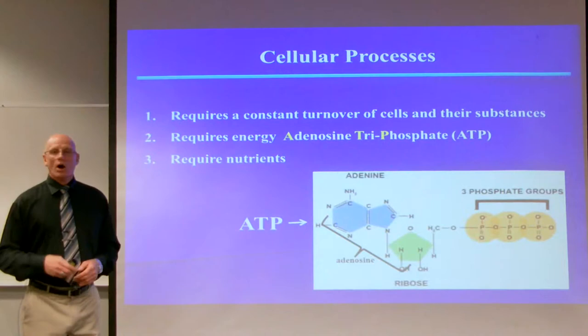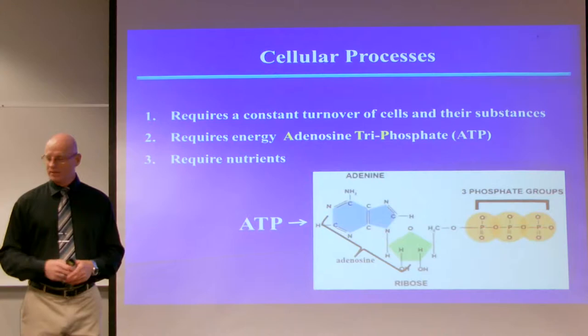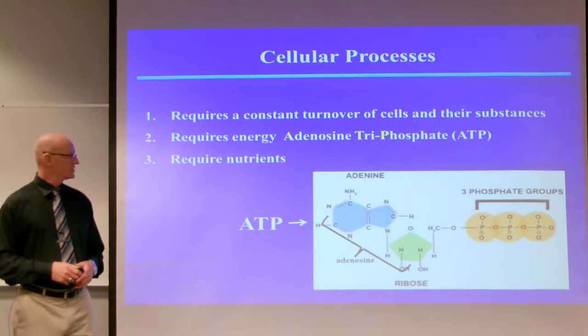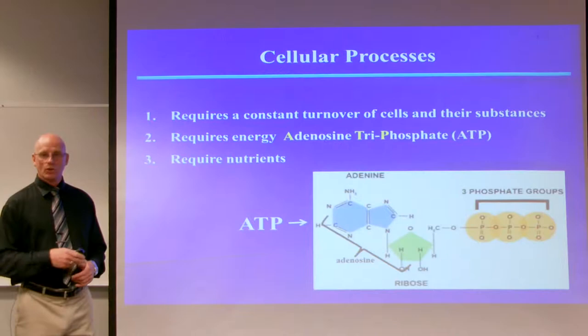All cellular processes require a constant turnover of cells and their substances. They require energy in the form of adenosine triphosphate, and they require nutrients — it's an ongoing process. I wanted to take this opportunity to show you a molecule of ATP, adenosine triphosphate.